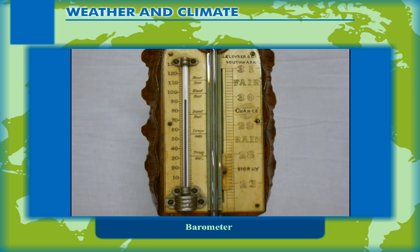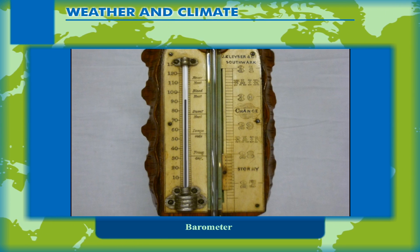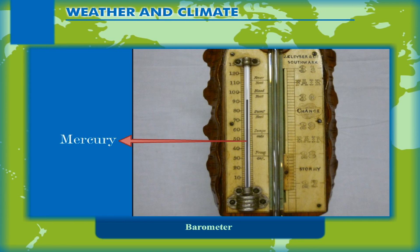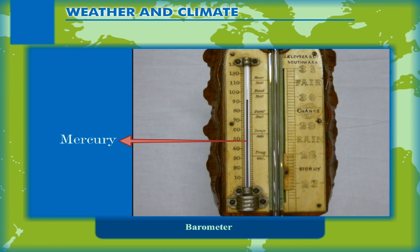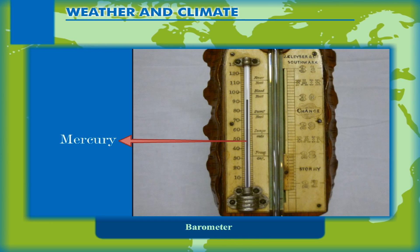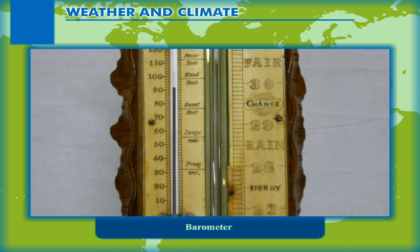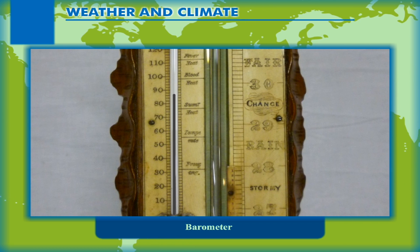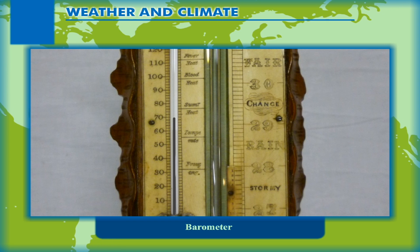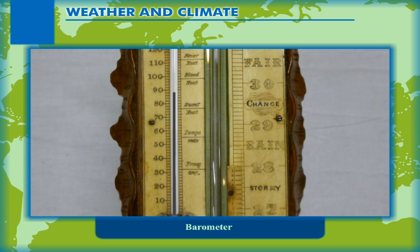The mercury barometer uses a glass tube which is about 1 metre long and a vessel filled with mercury. The mercury in the inverted glass tube is set up to the level of 76 centimetres. This is the height of mercury at sea level. When the atmospheric pressure is low, the level of mercury drops in the glass tube. The level of mercury in the glass tube rises with the rise in atmospheric pressure.